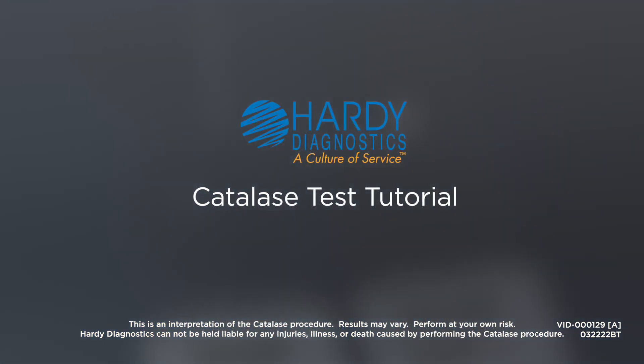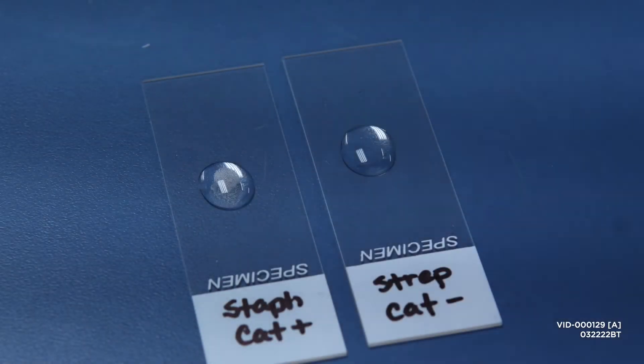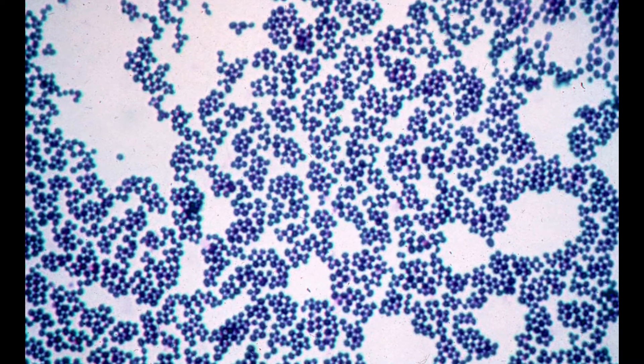Catalase tests can be used to determine if a gram-positive cocci is Staphylococcus or Streptococcus bacteria. These organisms will appear dark blue in the gram stain.